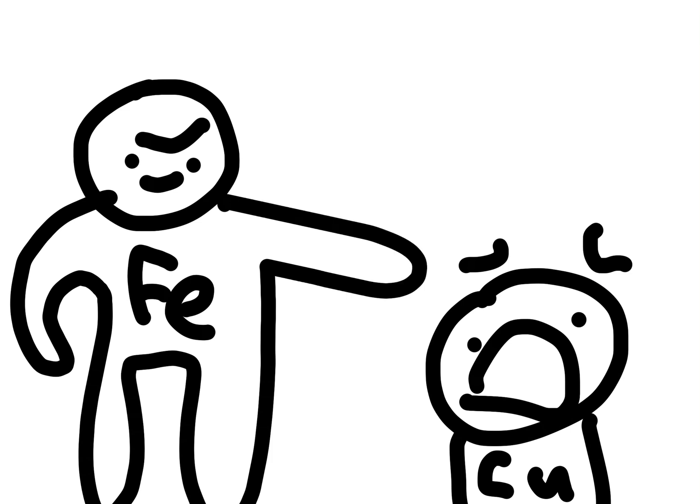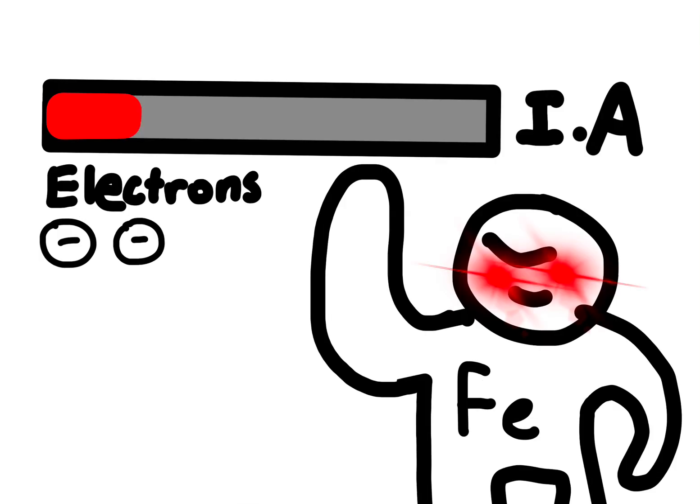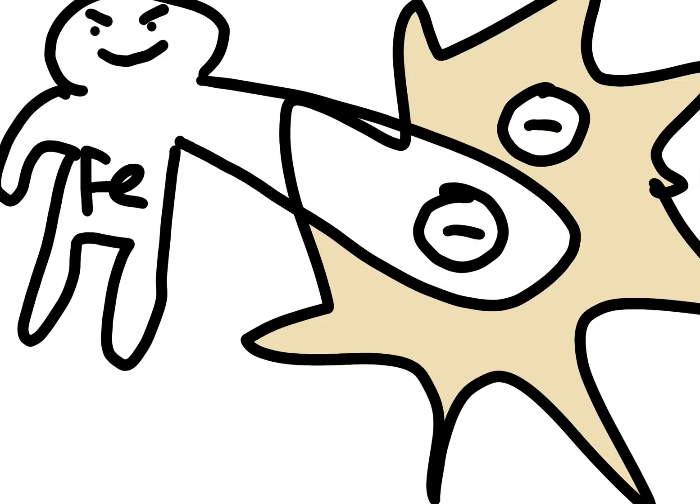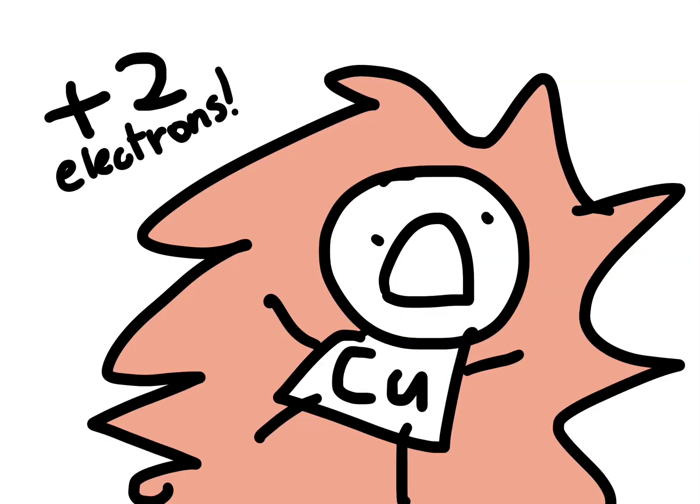The more reactive metal challenges the less reactive metal in the compound, as it has low ionization energy and wants to lose electrons more easily. The more reactive metal then donates its extra electrons to less reactive elements within the compound.